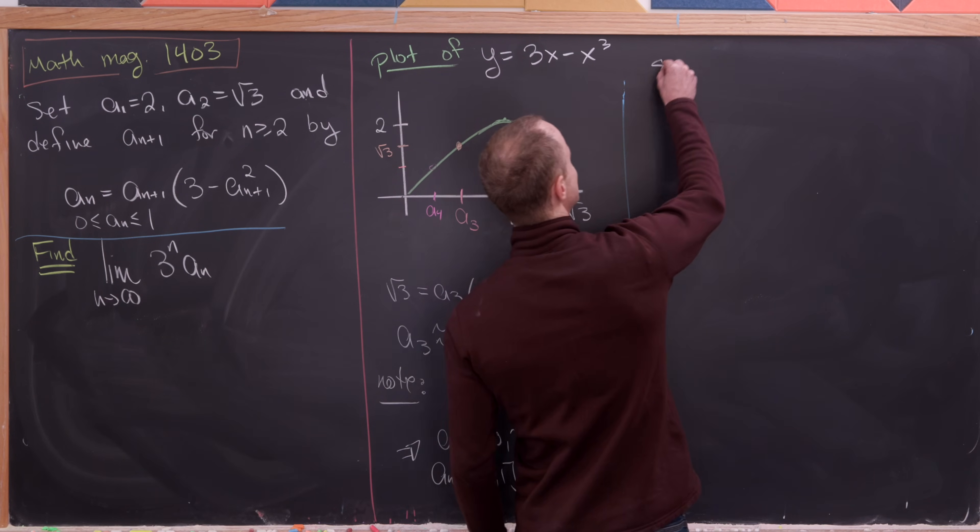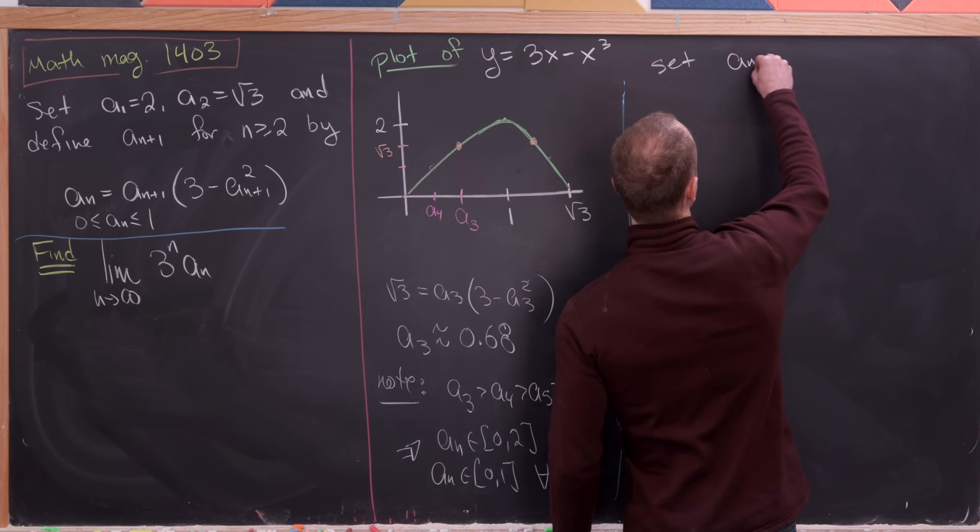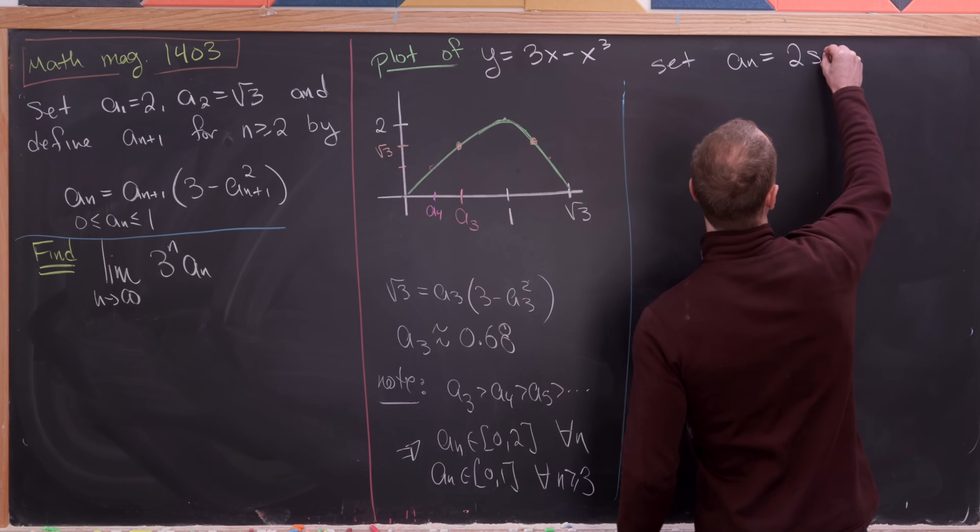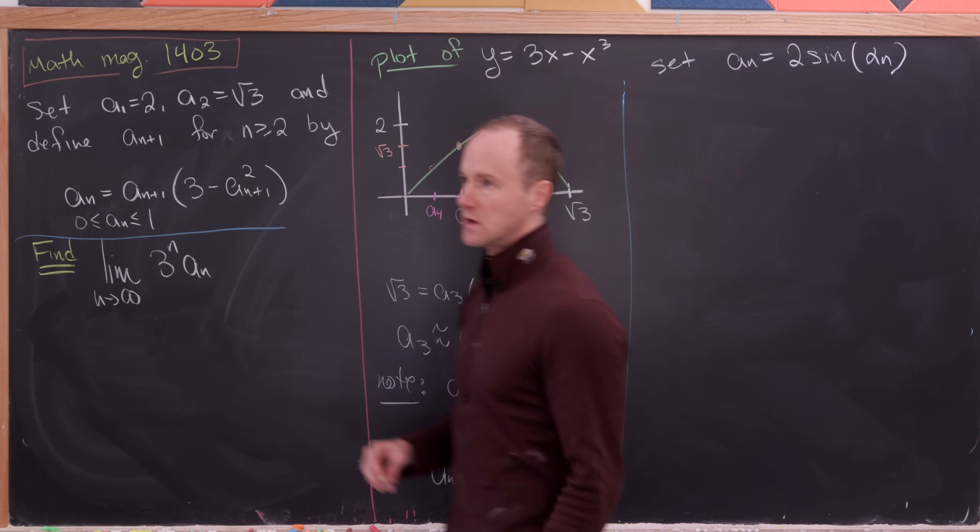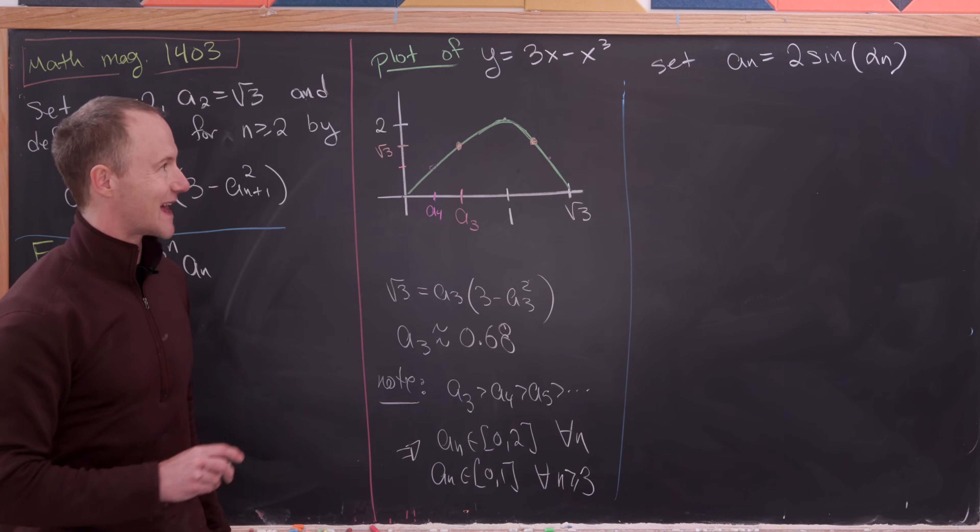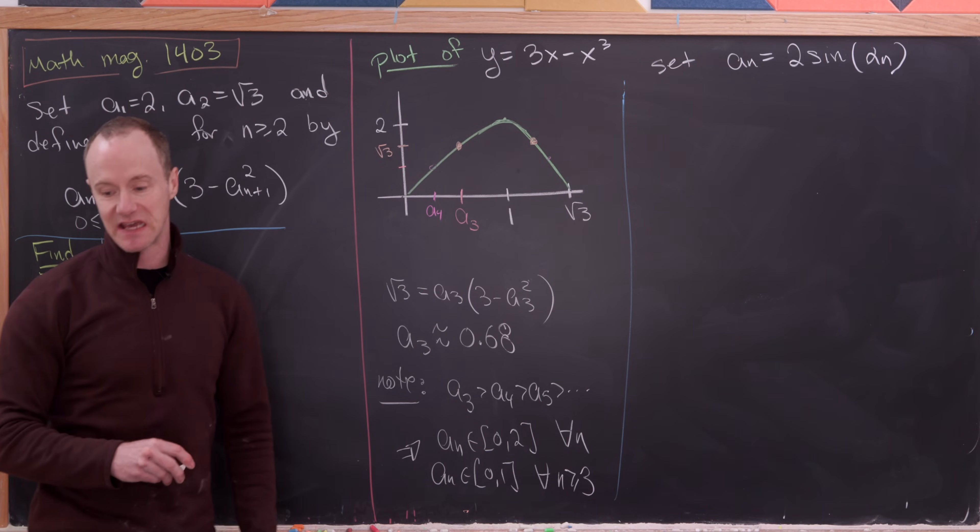Okay, so let's set a sub n equal to 2 times the sine of alpha sub n. So we're kind of defining a new sequence alpha n by this condition.